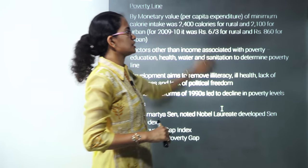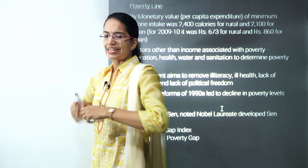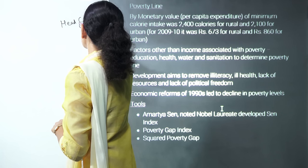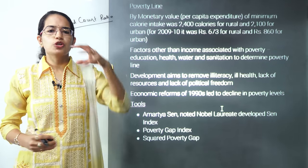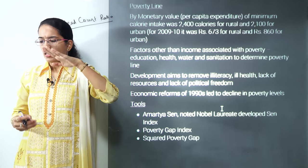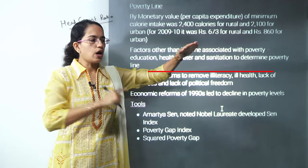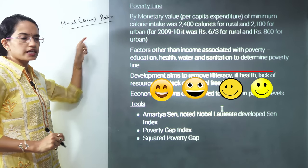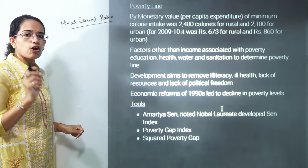There are four important indexes to measure poverty. The first is the head count ratio, which simply counts the number of individuals living below the poverty line. However, this ratio does not denote the severity of poverty.